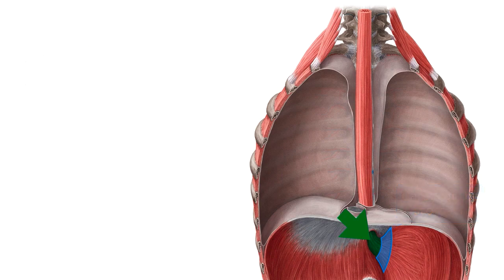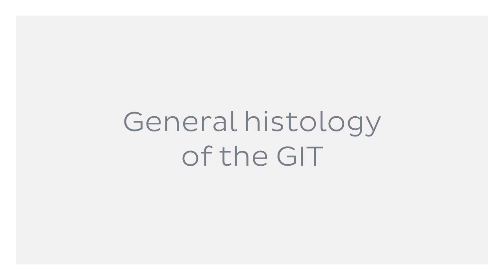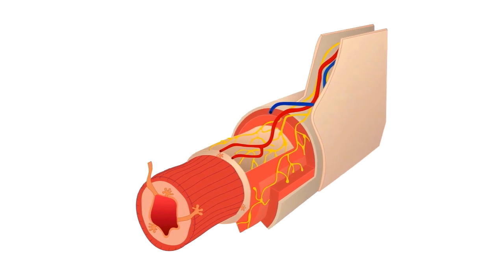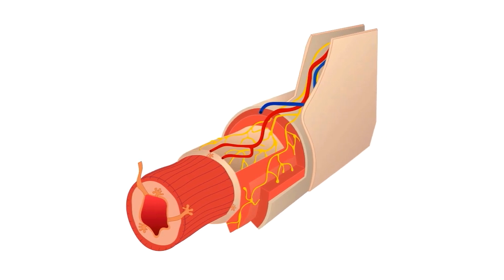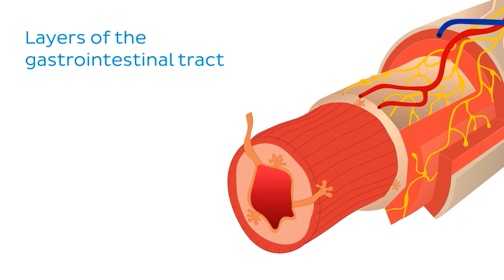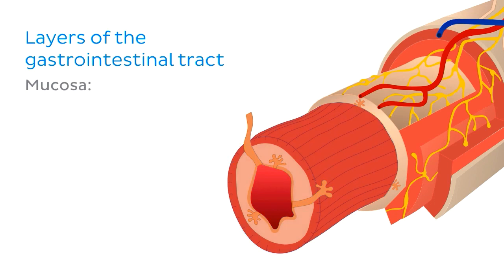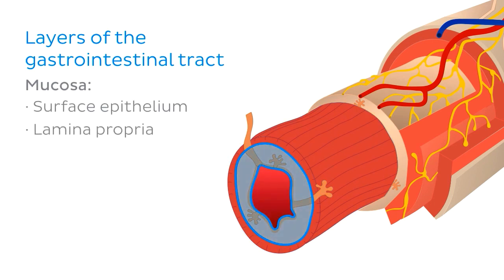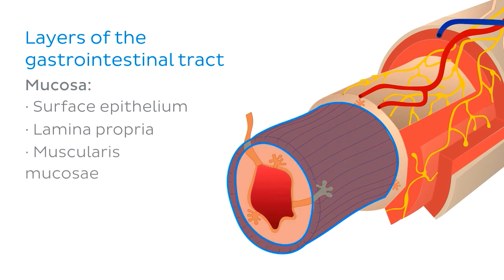With that covered, let's quickly move on to discuss the general histology of the gastrointestinal tract, which provides the template for the structure of the esophagus. Although regional-specific specialisations exist along the length of the gastrointestinal or digestive tract, the basic layers of its wall remain relatively uniform throughout the majority of its length. The first layer in direct contact with the lumen is the mucosa, which is further divided into the surface epithelium, the lamina propria, and the lamina muscularis mucosa.